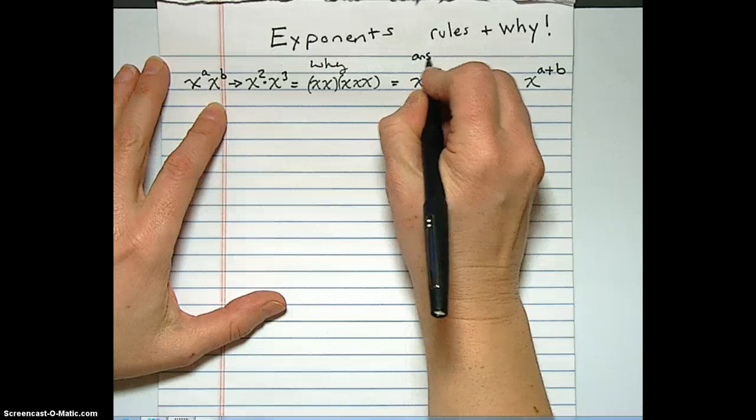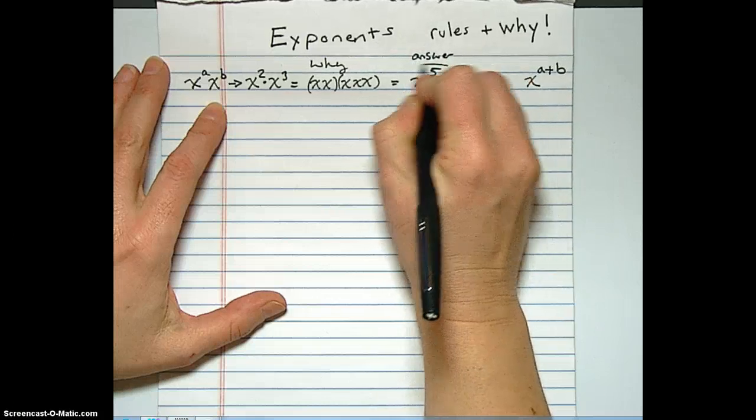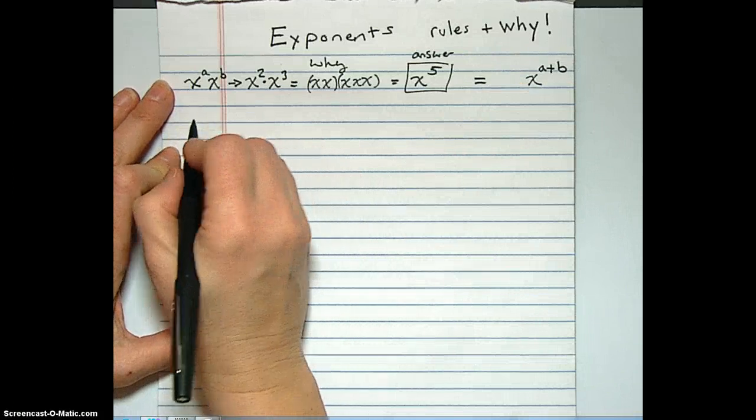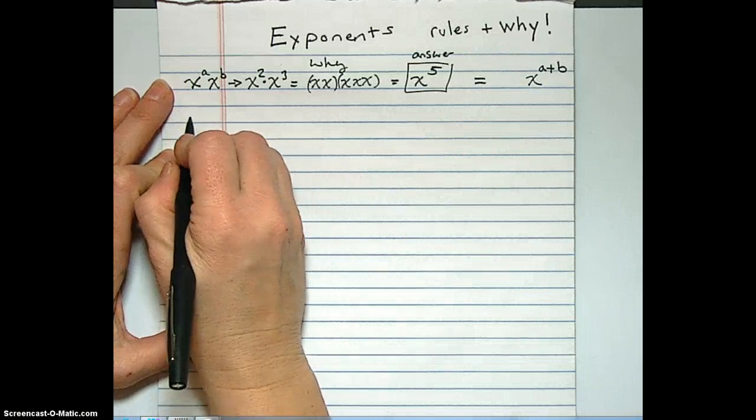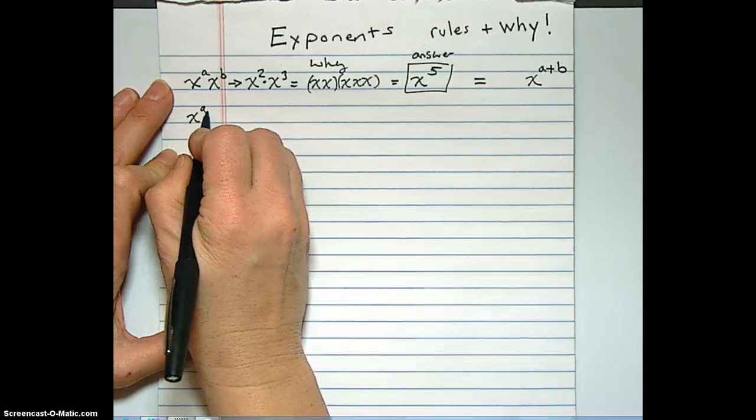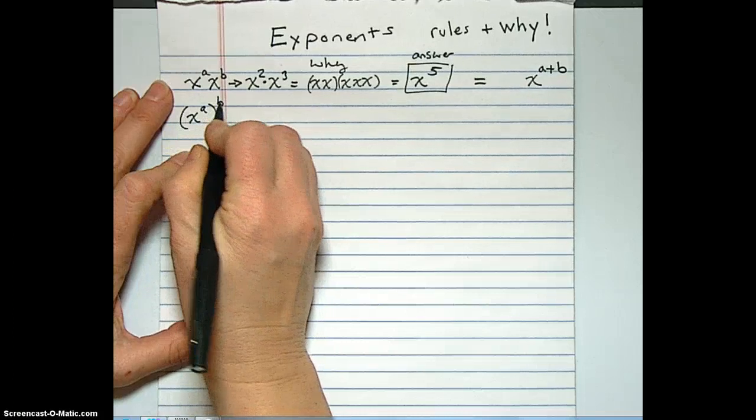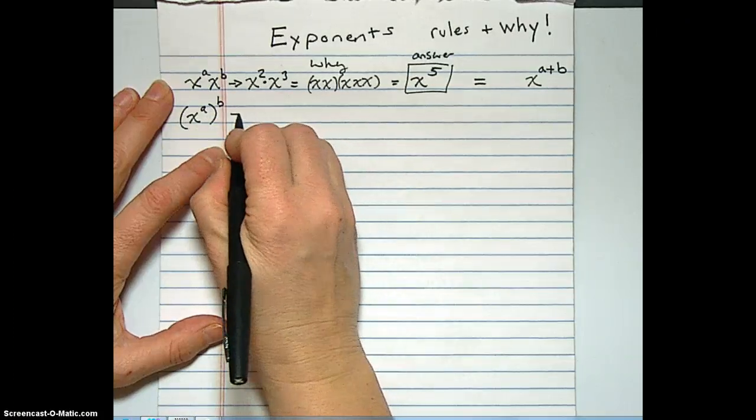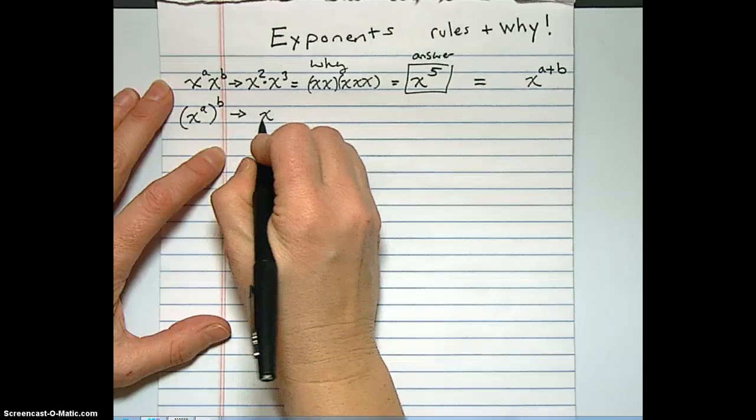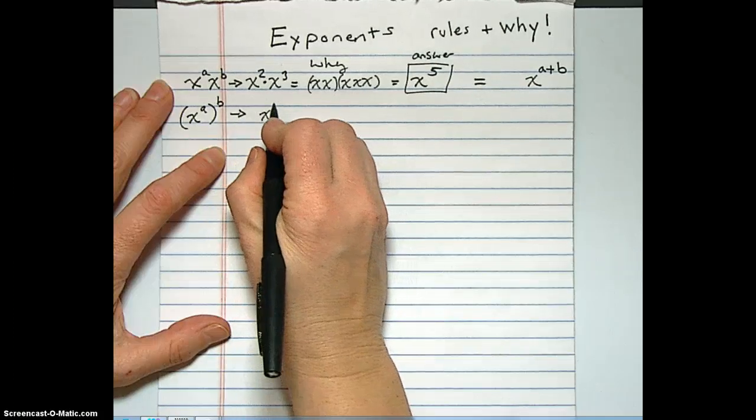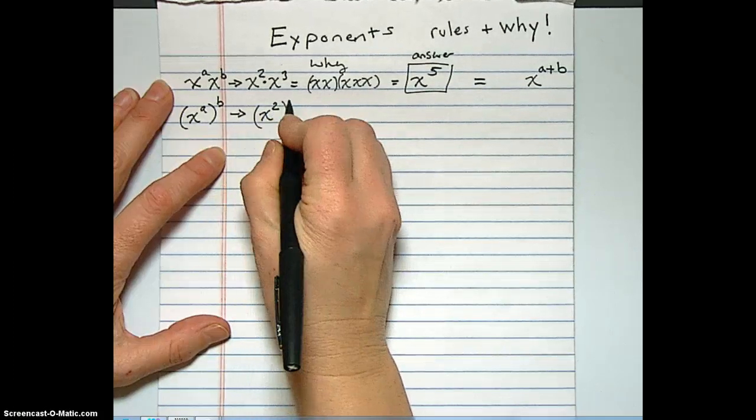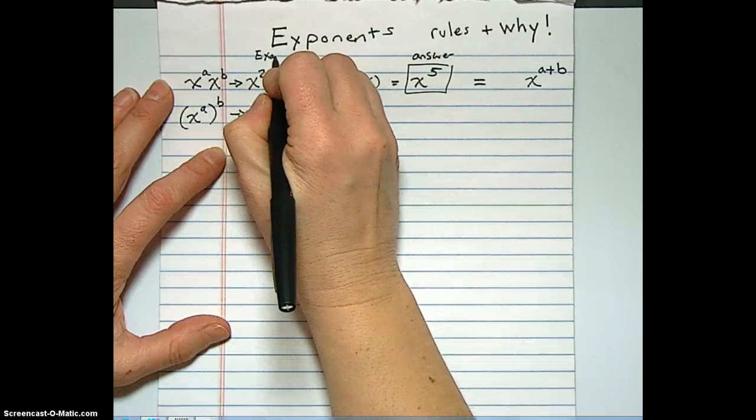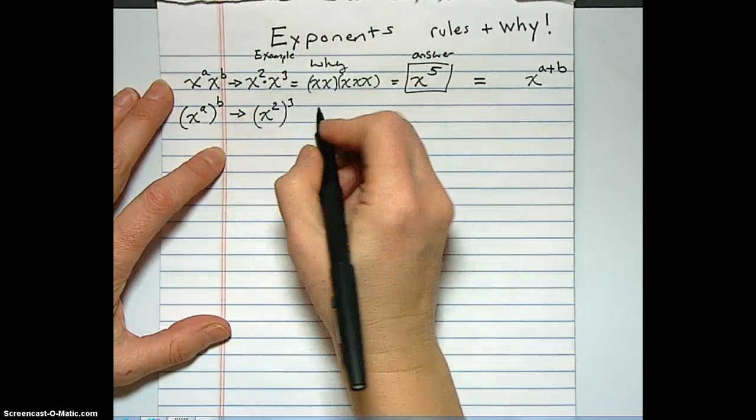So we're going to have all these different things going on to review exponent rules. Alright, let's next do a rule that frequently gets confused. x to the a raised to the b power. I'm not going to give you the rule yet. I'm going to give an example. So, x squared to the third power. So let me be clear. This part here is an example. Example.